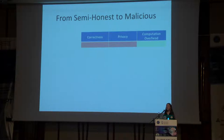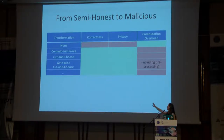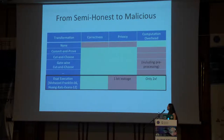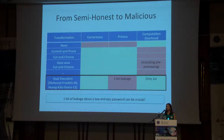The upside is that Yao's garbled circuits are actually really fast as two-party computation goes. There are many transformations that guarantee correctness and privacy against a malicious party, but the overhead tends to be high. There is one transformation called dual execution, which has very small overhead — only twice as expensive as regular Yao's garbled circuits — but its downside is that it gives one bit of leakage to the adversary. In our low-entropy password setting, one bit of leakage can be crucial, so we modify dual execution to eliminate this leakage specifically for Fuzzy PAKE.